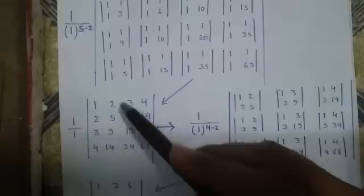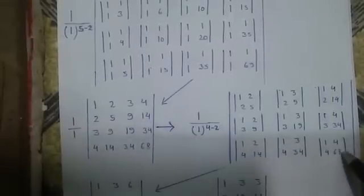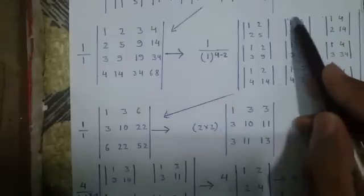For the third row, 1, 4 as common, 2, 4, 14, 3, 34, 4, 68. Again, finding minors, so you will get this matrix, 5 minus 4 that is 1, 9 minus 6 that is 3 and 14 minus 8 that is 6.